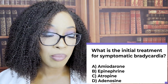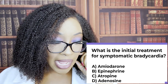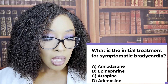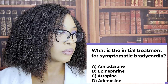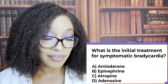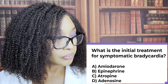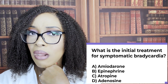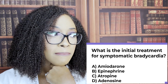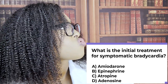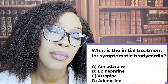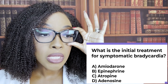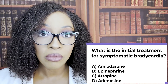The correct answer is C, atropine. The patient has bradycardia, and atropine increases the heart rate by blocking the vagus nerve. Yes, you do need to know the mechanism of action — that's why we're talking about it.